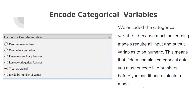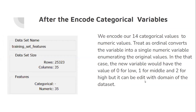Encoding categorical variables. We encoded the categorical variables because machine learning models require all input and output variables to be numeric. This means that if data contains categorical data, you must encode it to numbers before you can fit and evaluate a model. After encoding, we converted our 14 categorical values to numeric values. Treating them as ordinal converts the variable into a single numeric variable, enumerating the original values — for example, the new variable would have a value of 0 for low, 1 for middle, and 2 for high.